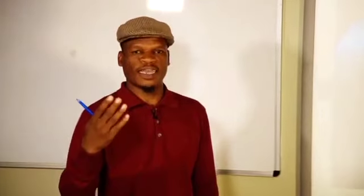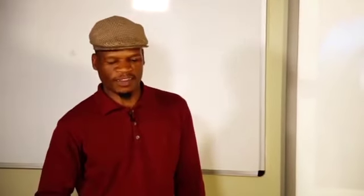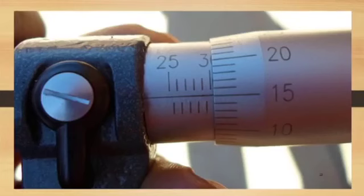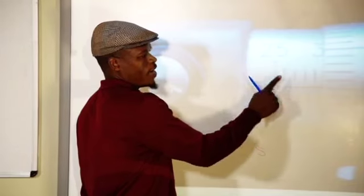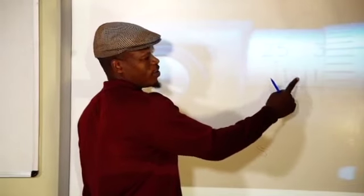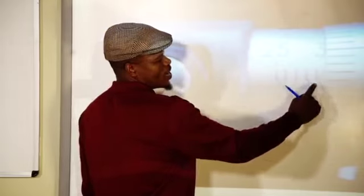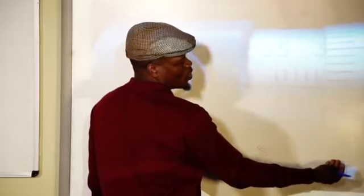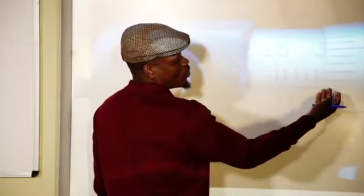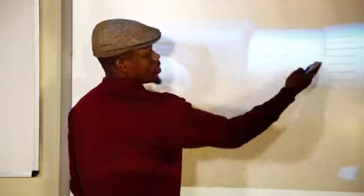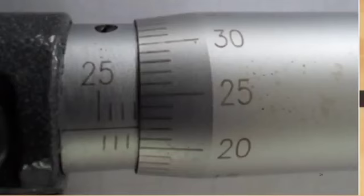In the second micrometer example, the main scale starts at 25, reading 25, 26, 27, 28, 29. The corresponding micrometer scale value is 20, giving a reading of 29.20.